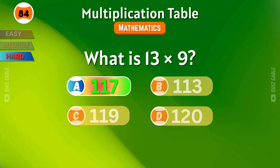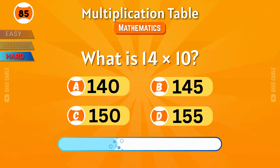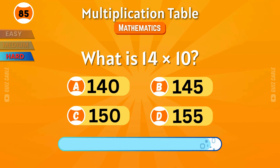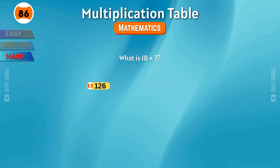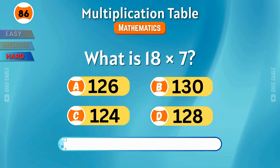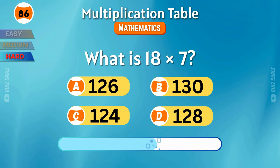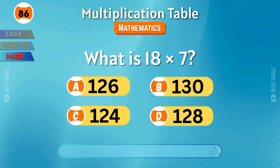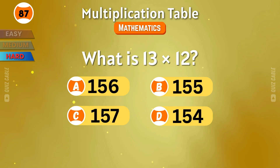What is 14 times 10? Correct — 140. What is 18 times 7? That's 126. What is 13 times 12? That equals 156.